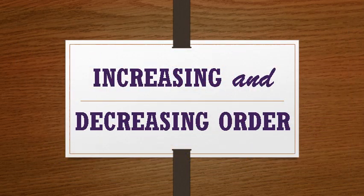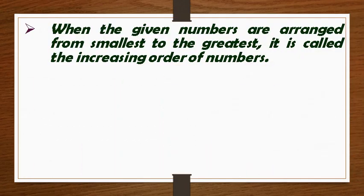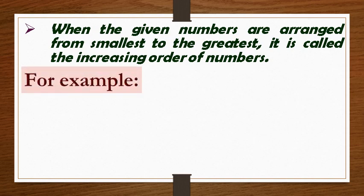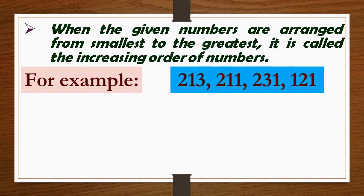By comparing numbers, we can also arrange them in increasing and decreasing order. When the given numbers are arranged from smallest to the greatest, it is called the increasing order of numbers. For example, the numbers 213, 211, 231, 121 can be arranged in increasing order as shown here.